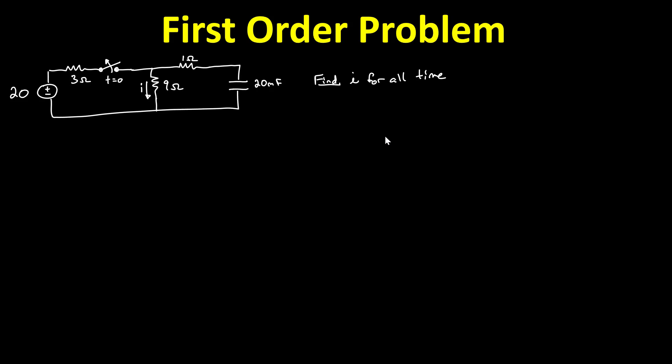In this video, I'm going to analyze a typical switched DC first order problem. The first step is to determine if the schematic actually is a switched DC first order problem. Let's see first if it's first order. It has resistors, it has voltage sources, but it only has a single capacitor — a single energy storage element — so therefore it is first order. If it had two capacitors, two inductors, or a capacitor and an inductor, there would be two energy storage elements, so it would be second order. But this is definitely first order.